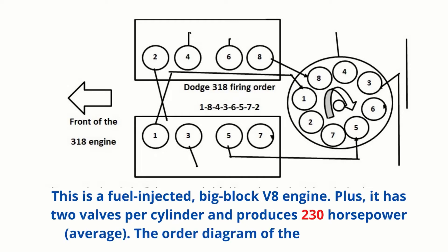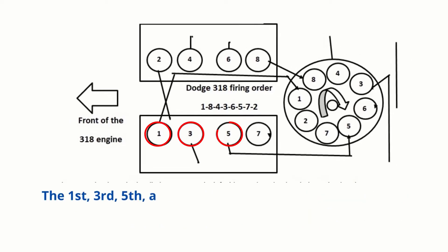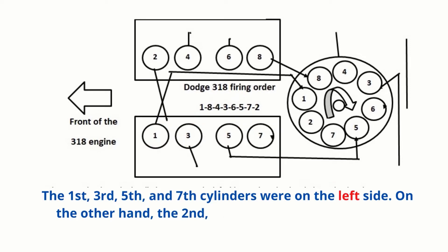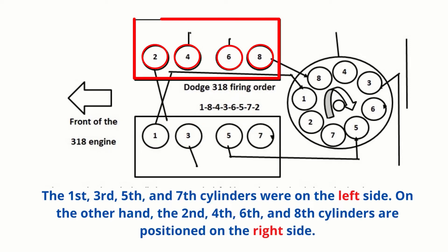The order diagram of the 318 engine is: The 1st, 3rd, 5th, and 7th cylinders were on the left side. On the other hand, the 2nd, 4th, 6th, and 8th cylinders are positioned on the right side.